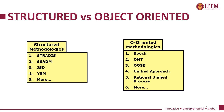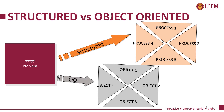Here we can see examples of Structured Methodologies and Object-Oriented Methodologies. For Structured, we have Stradis, SSADM, JSD, YSM, and more. For Object-Oriented Methodologies, we have Booch, OMT, OOSA, Unified Approach, Rational Unified Process, and more. The key difference is that Structured focuses on the process itself, while Object-Oriented focuses on the object.